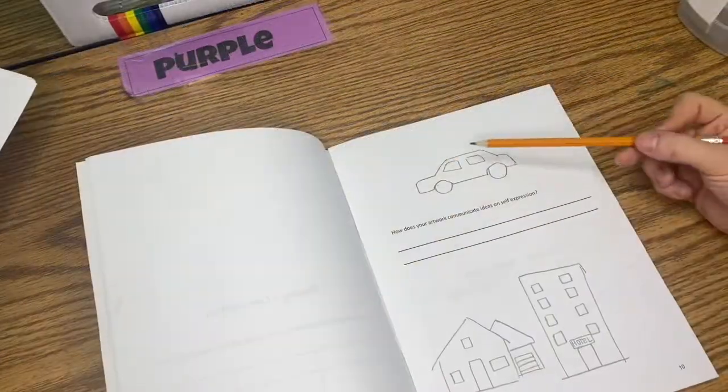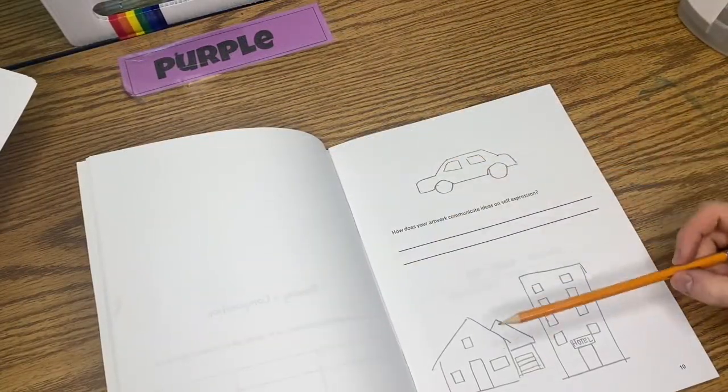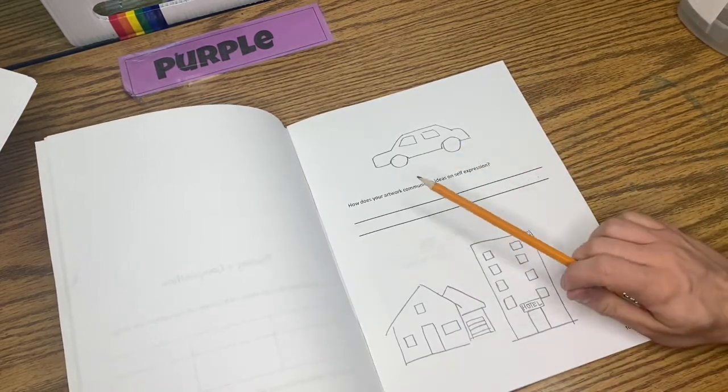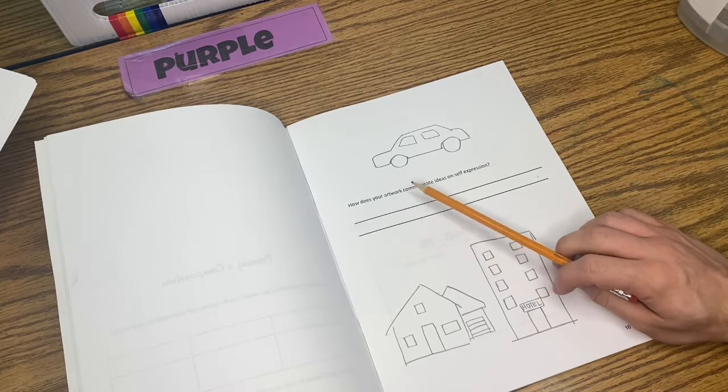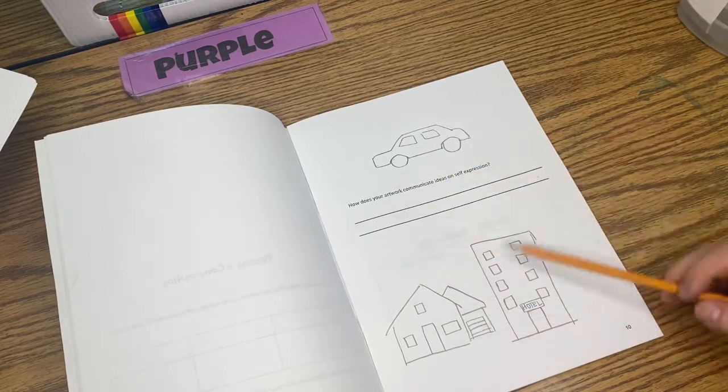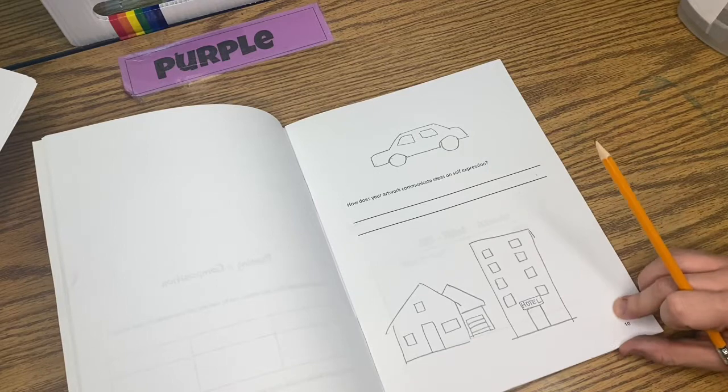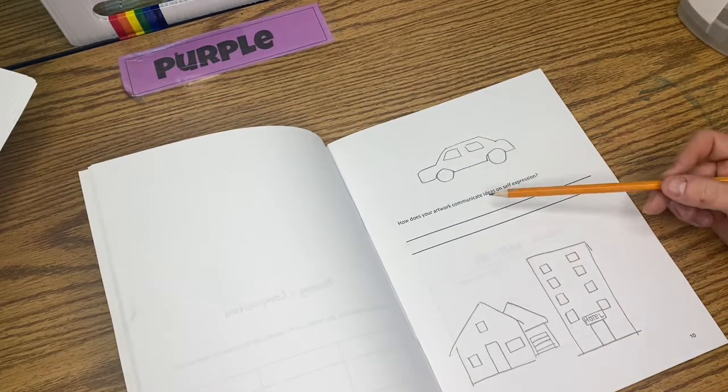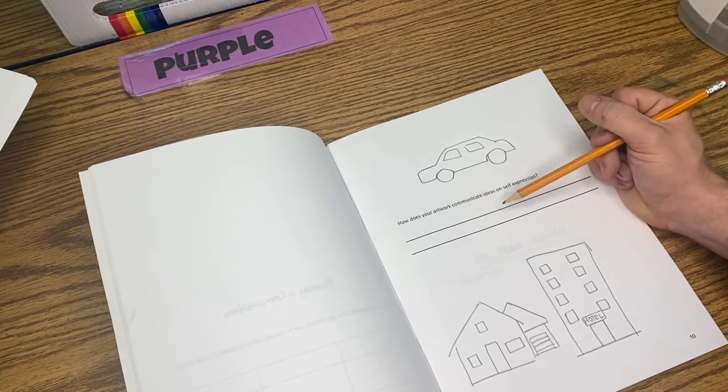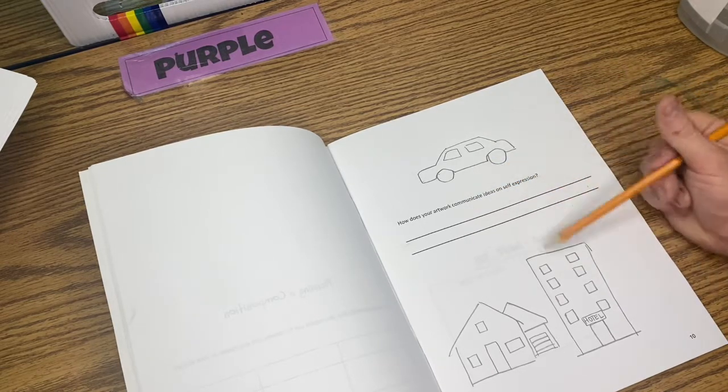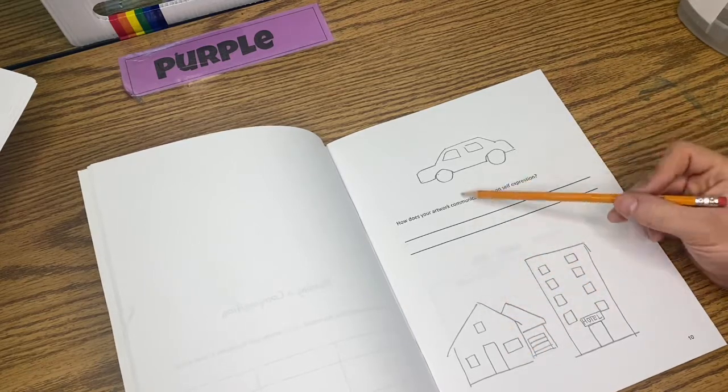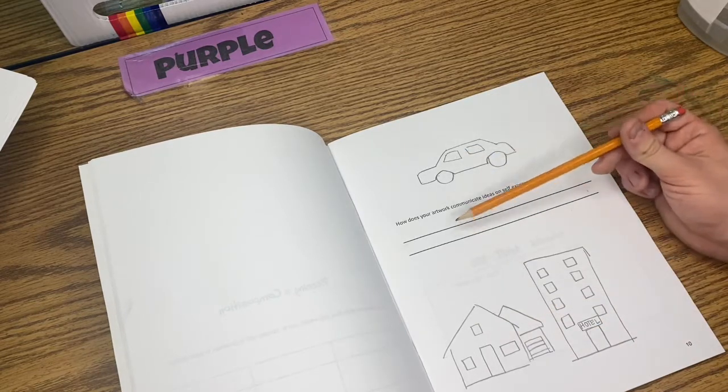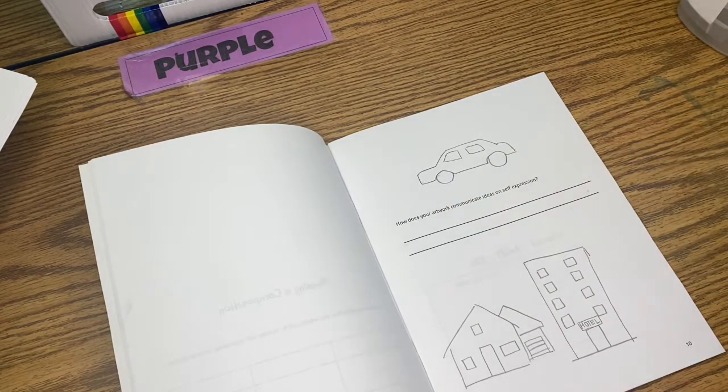So I came up with three ideas. I have a car, a house, and a tall hotel. What I want you to think about as you're drawing these is how does your artwork communicate ideas on self-expression? If you finish all three sketches early, I'll set a timer for about four minutes. Tell me how they're different—maybe you got these ideas from when you visited Dallas or saw a building that looked like this. How did you come up with these ideas? Sketch at least three, and if you finish early, tell me how they're unique.